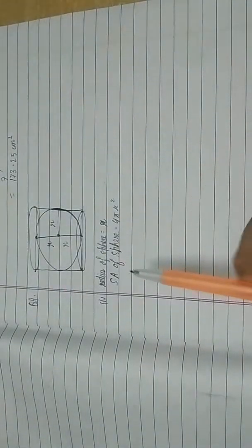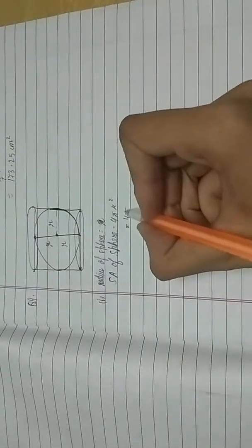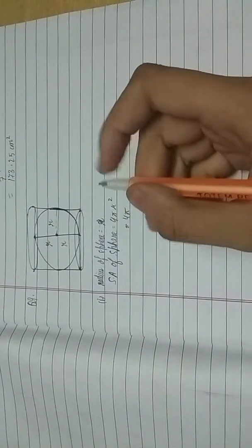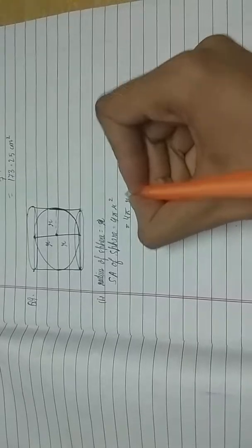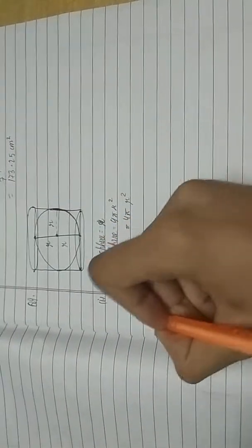Now since you are already given that the radius is r, you just have to substitute the values. So it would be equal to 4πr². It remains like this only. Now moving on to the second part.